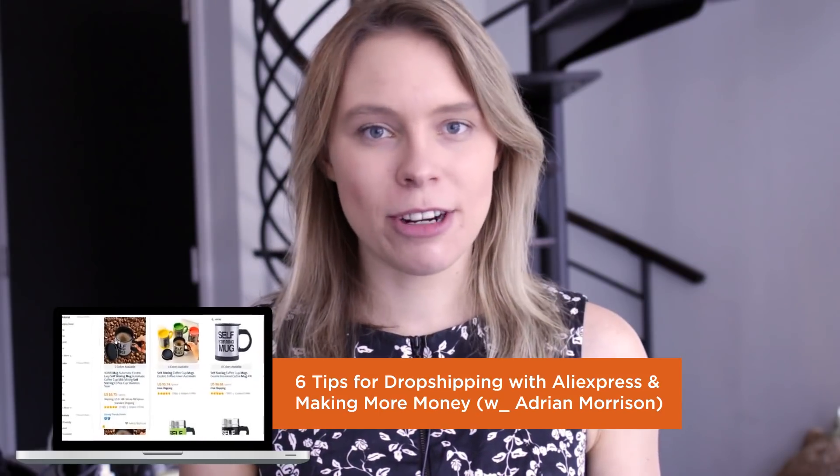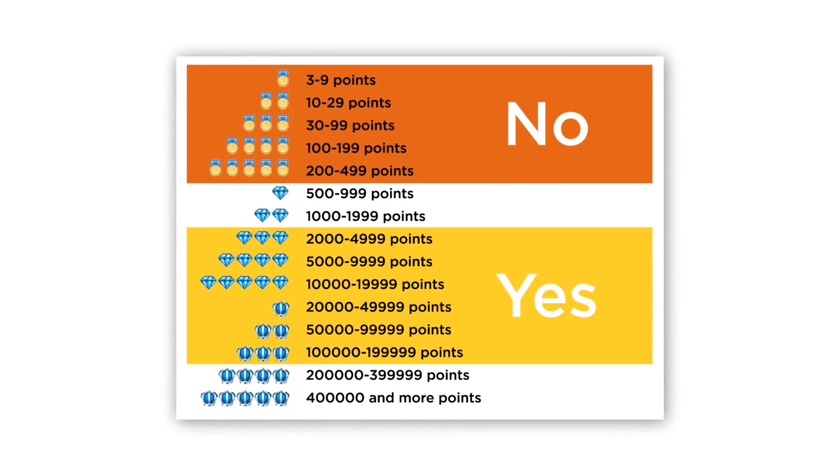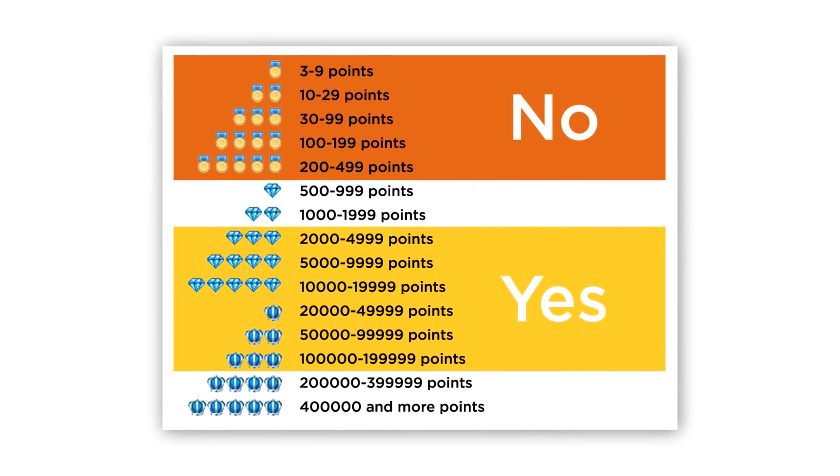I will have a link to that video in the description below. Basically you want to be looking for suppliers that have a feedback score between 2,000 to 2 million. If you pick a supplier with a feedback score above 2,000, then you know that they are experienced, established, and are almost certainly working or have worked with dropshippers. And if you pick a supplier with a feedback score of less than 2 million, then you know that they're not doing insane amounts of volume, so they're going to be more attentive to the messages that people leave on their orders.